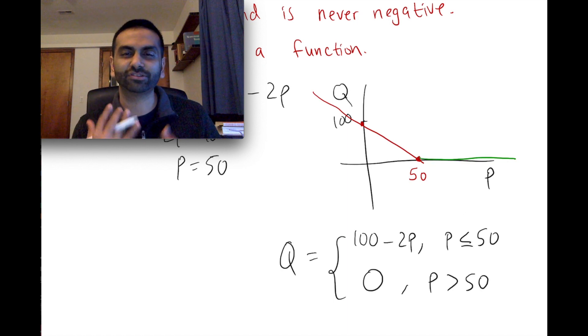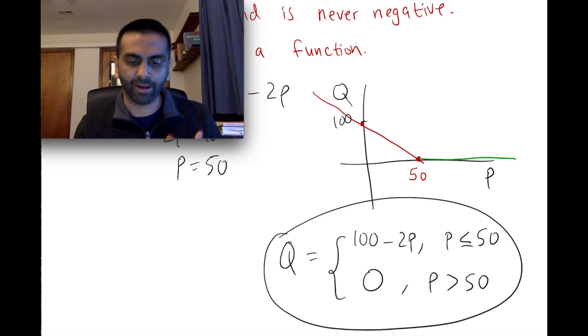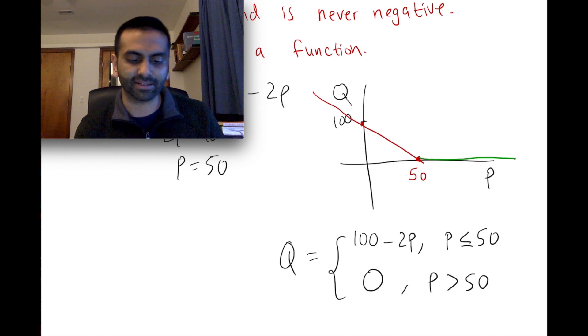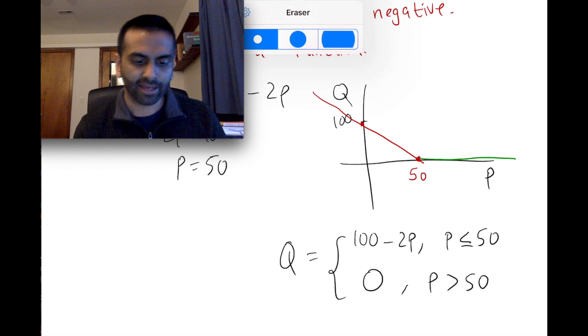So often, piecewise functions are simplistic things, but they're often written in a complicated way. In this particular problem, we might even say, in fact, prices shouldn't be negative either, so we'd want to cut this function off here.